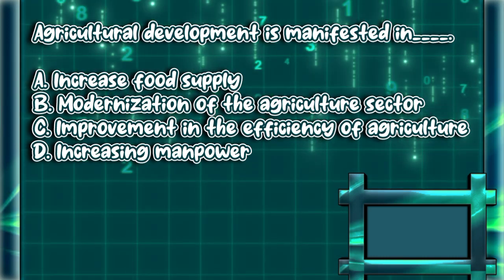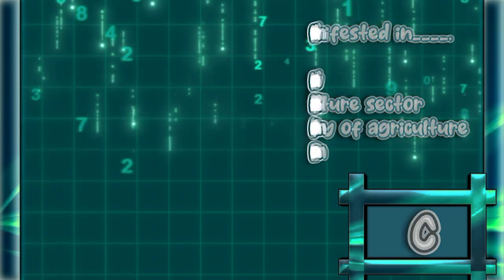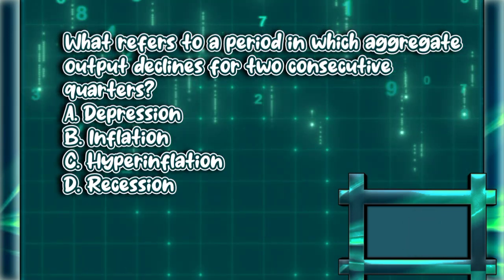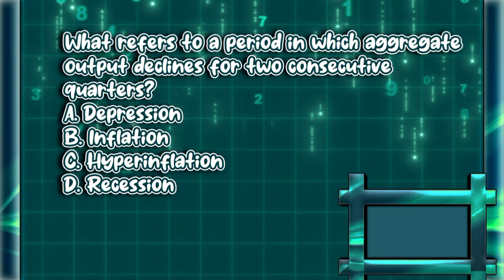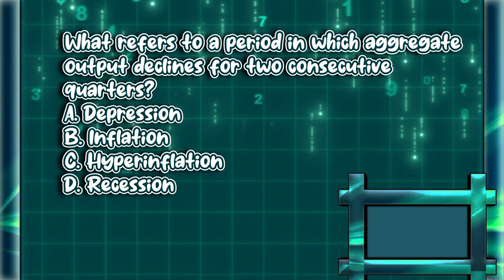The answer is letter C. What refers to a period in which aggregate output declines for two consecutive quarters? A) Depression, B) Inflation, C) Hyperinflation, D) Recession. The answer is letter D.